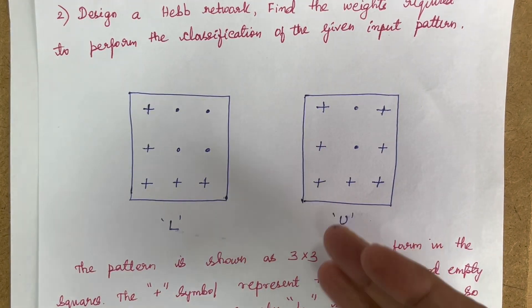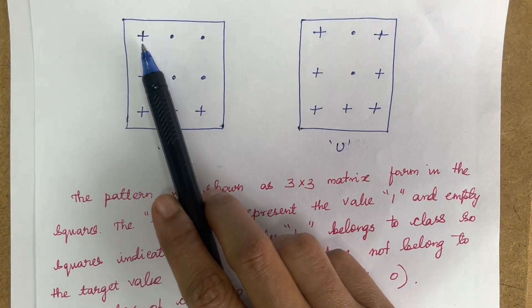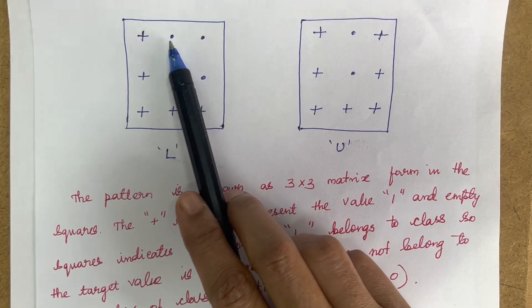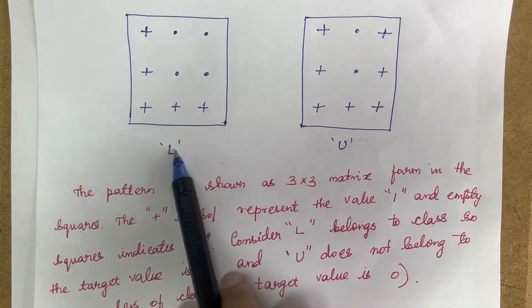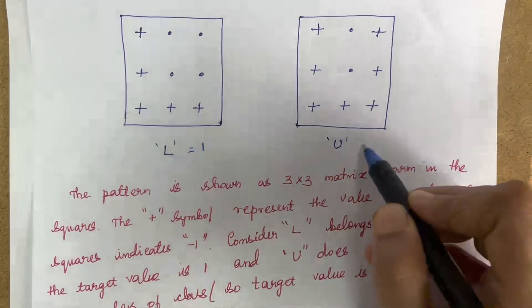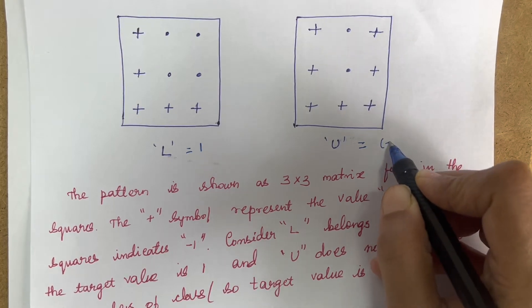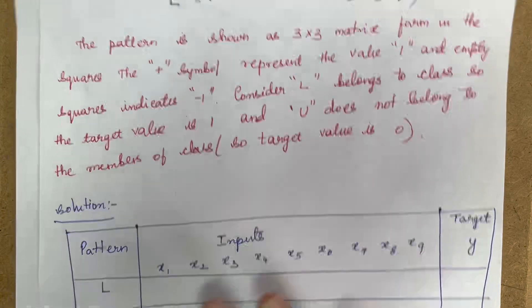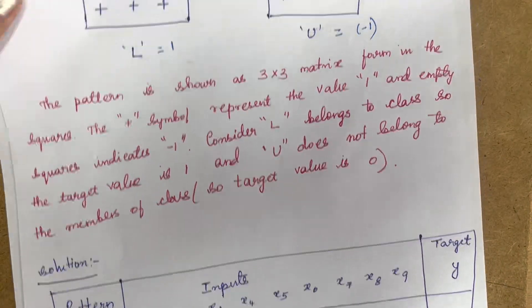From the given patterns we need to form the inputs. If a cell has a plus symbol it is represented as 1; if it has a dot symbol it is represented as −1. The pattern L belongs to the class so its target value will be 1. The pattern U does not belong so its target value will be 0 or −1. We now substitute these plus and −1 values into the tabular column.